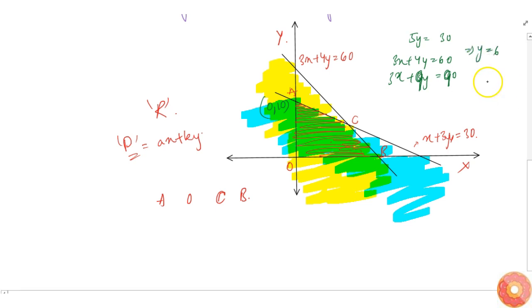If Y equals 6, then 3X plus 24 equals 60, so X equals 36 divided by 3, which is 12. So we have 12 comma 6. Point B is simply 20 comma 0.